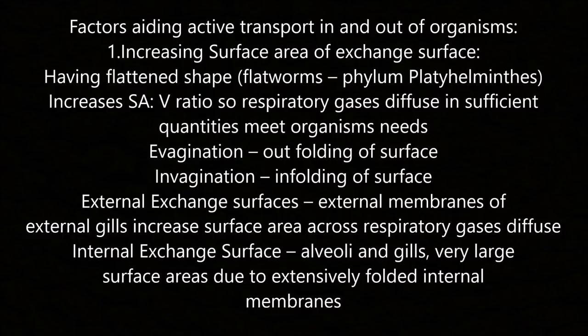Factor 1 is increasing the surface area of the exchange surface. Flattened shapes such as flatworms increase the surface area to volume ratio so respiratory gases diffuse in sufficient quantities. Evagination is the outfolding of the surface and invagination is the infolding. External exchange surfaces include external gills; internal exchange surfaces include alveoli and gills with very large surface areas due to extensively folded internal membranes.